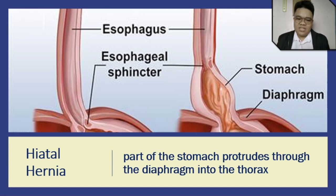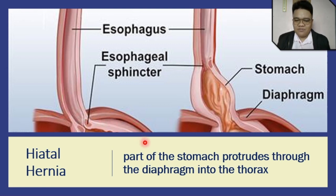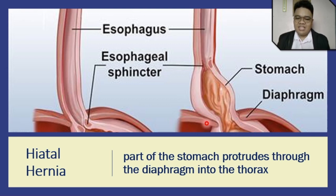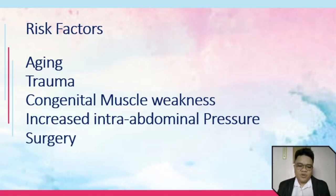If you would look at the image shown on the slide, you can see that the normal anatomy on your left would show the stomach below the diaphragm. Whereas on your right, you can see that a part of the stomach has protruded through the diaphragmatic hiatus. This is because of the weakening of the muscles of your diaphragm.